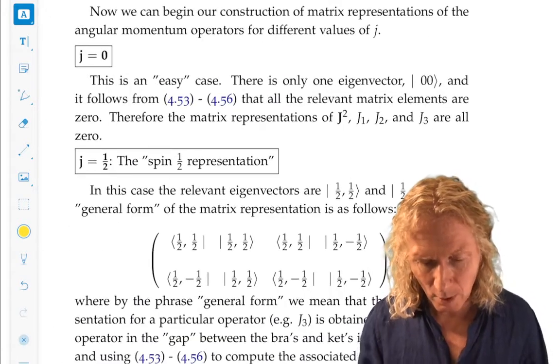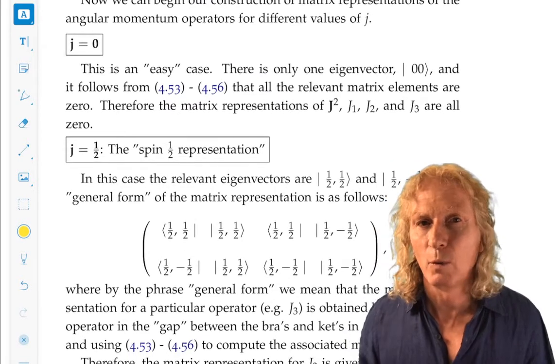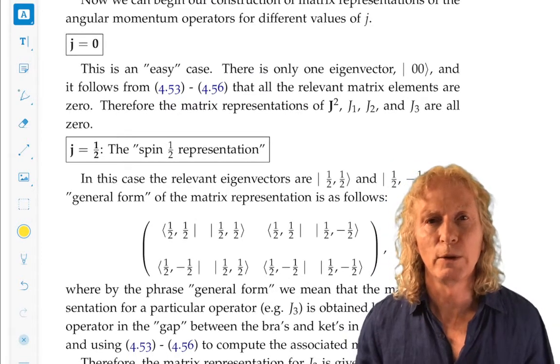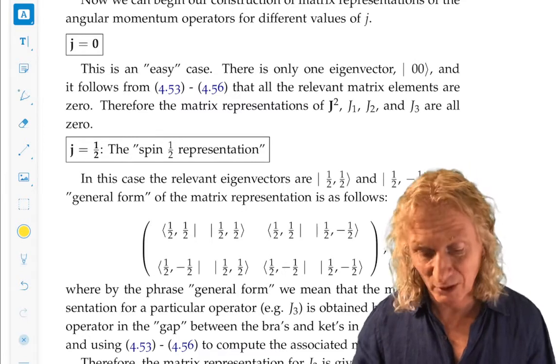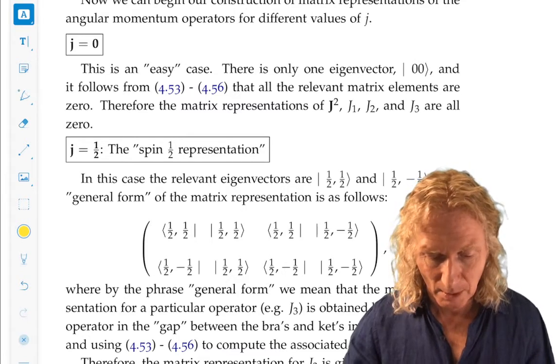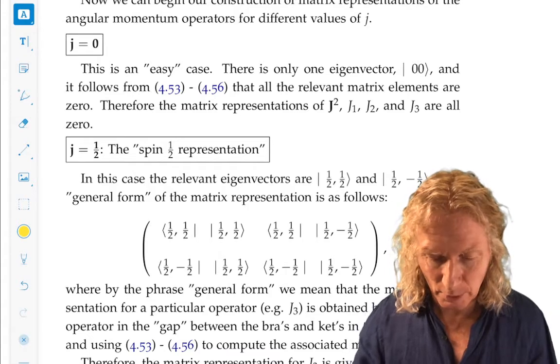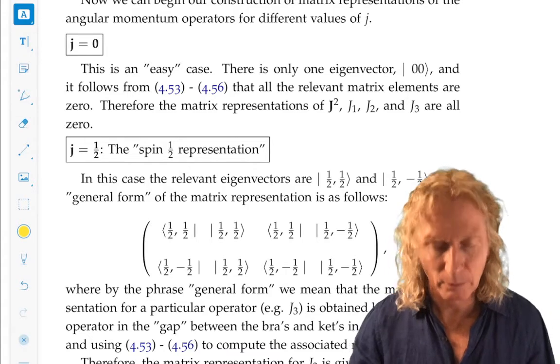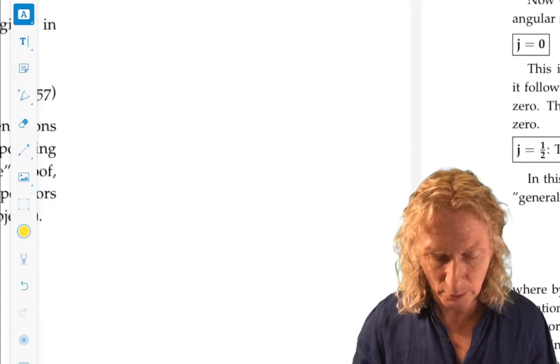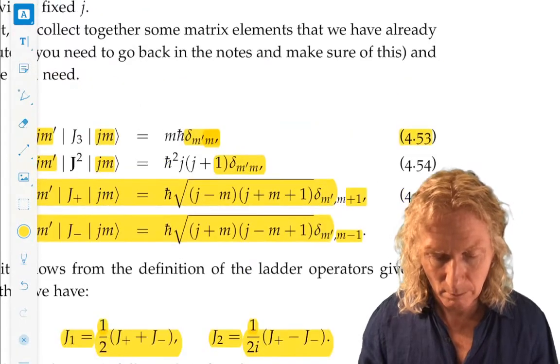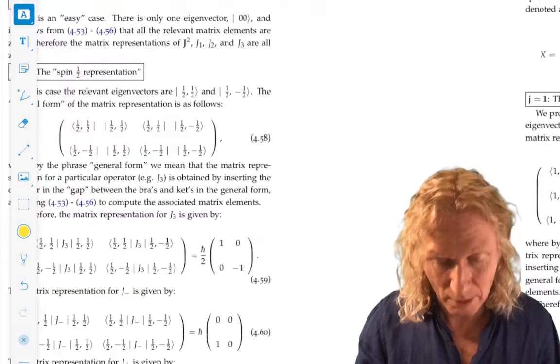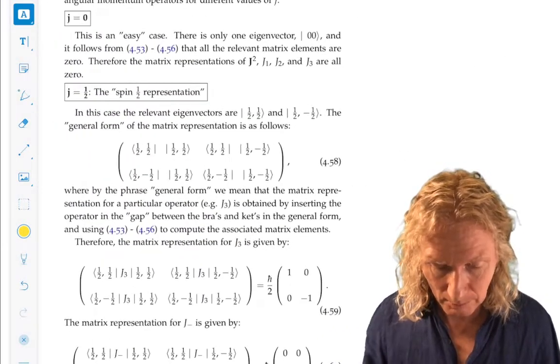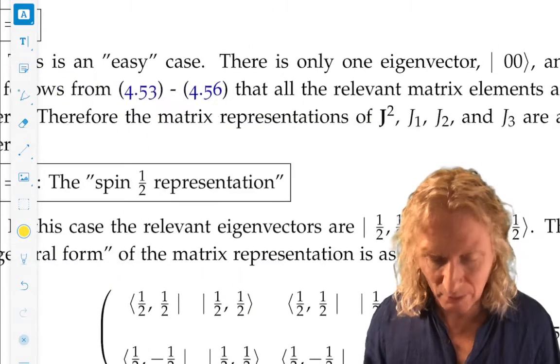Okay, j equals zero is easy. Why? There's only one eigenvector. So, j equals zero, and m goes from minus j to plus j, zero. So, it turns out, you can check with the matrix elements that I just showed you. All the matrix elements are zero, it's one-dimensional, and it's trivial.